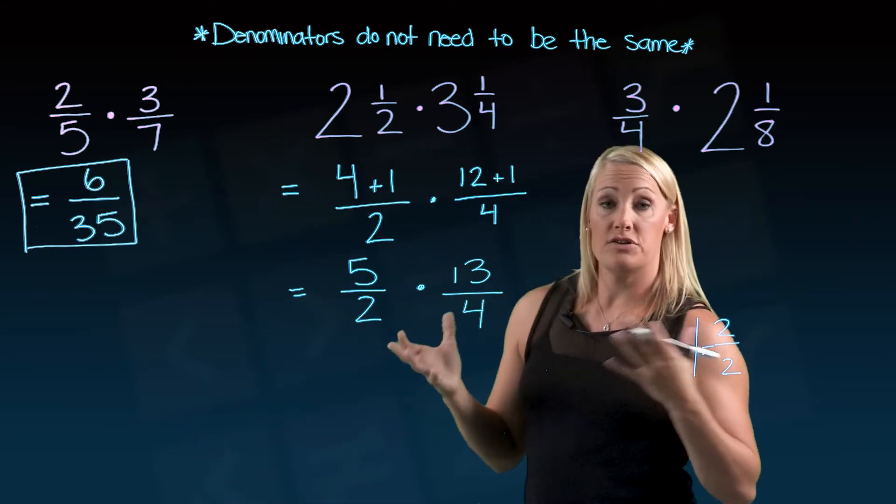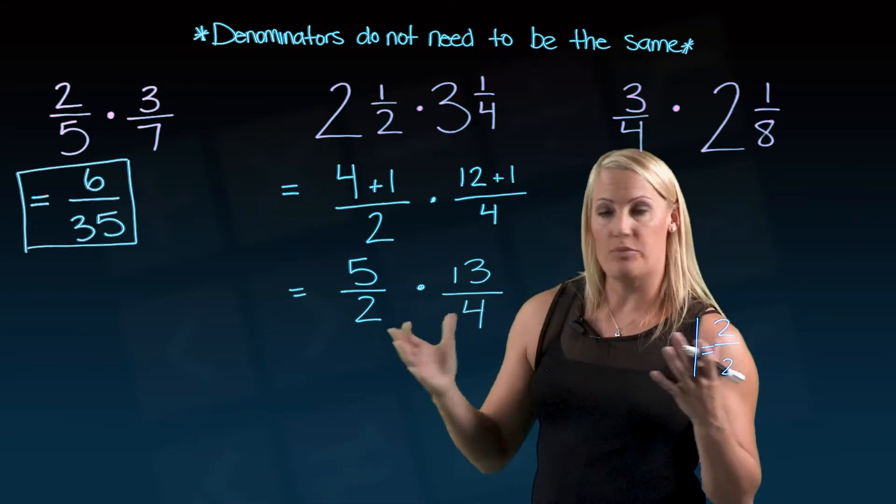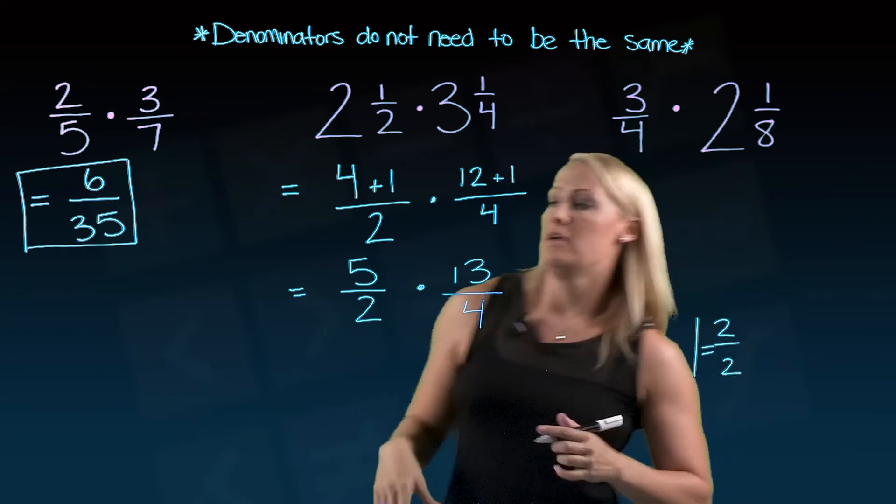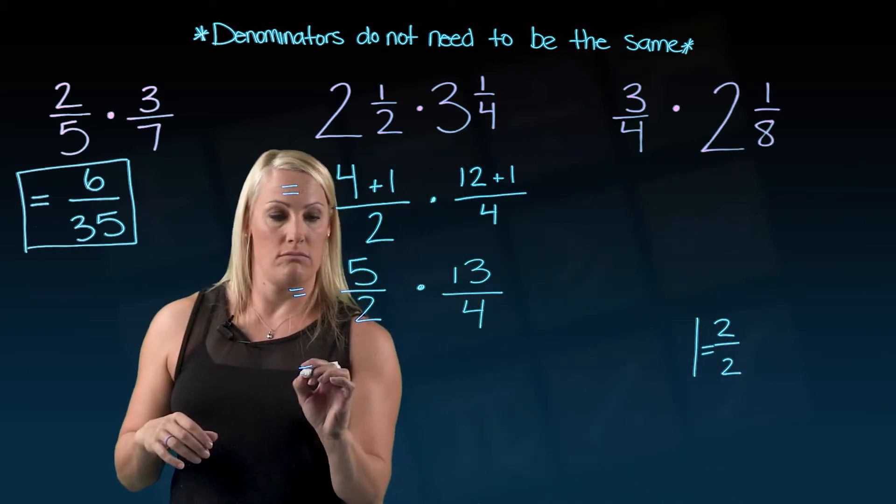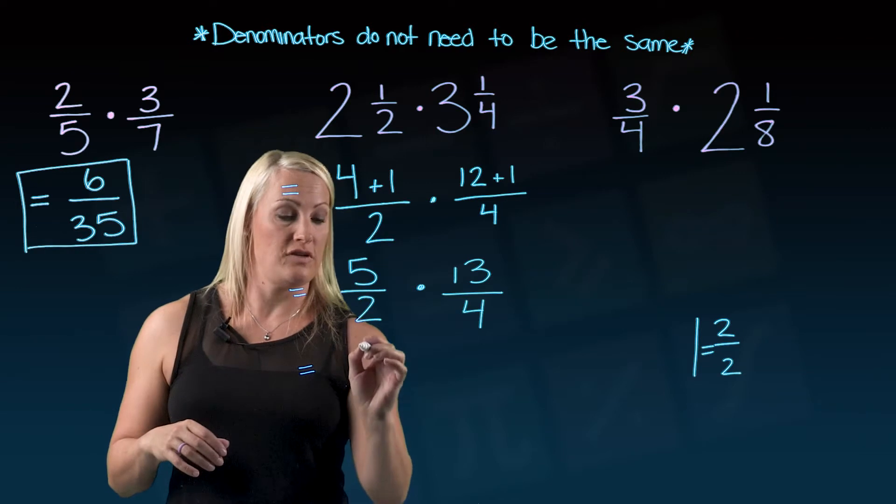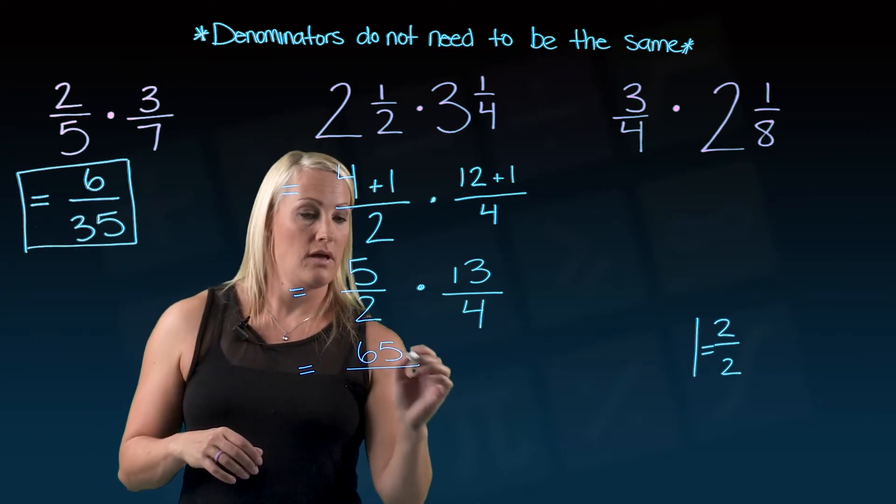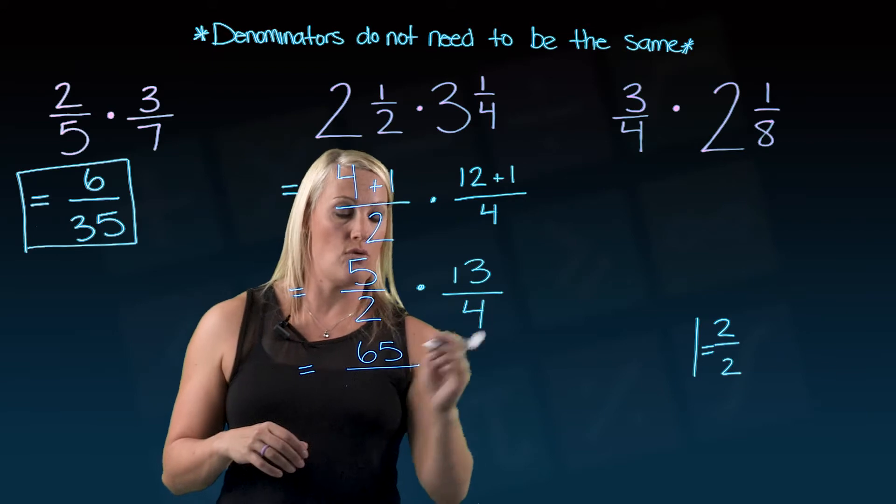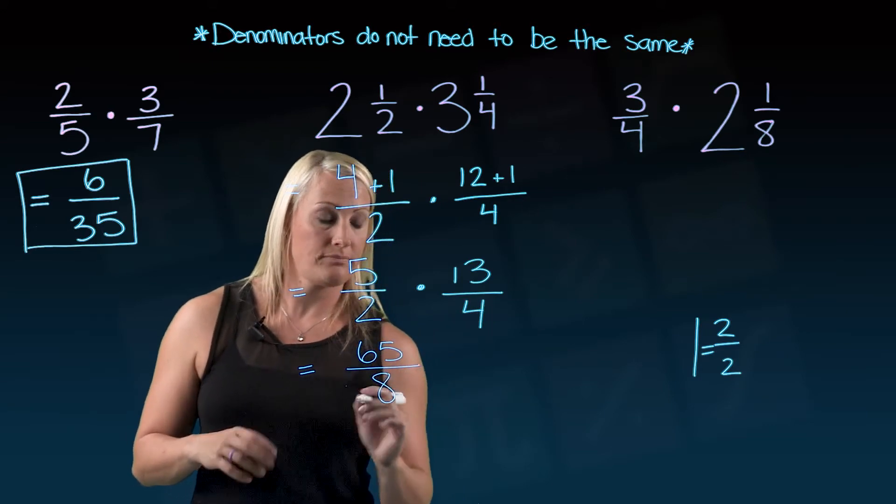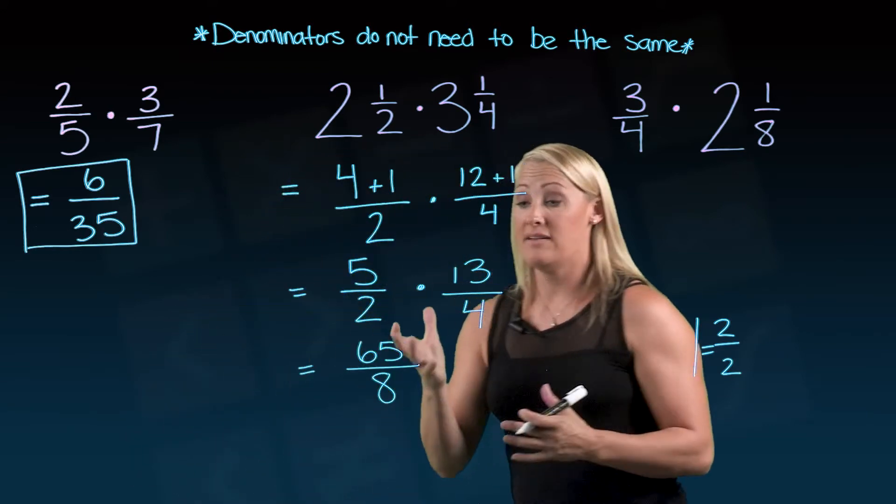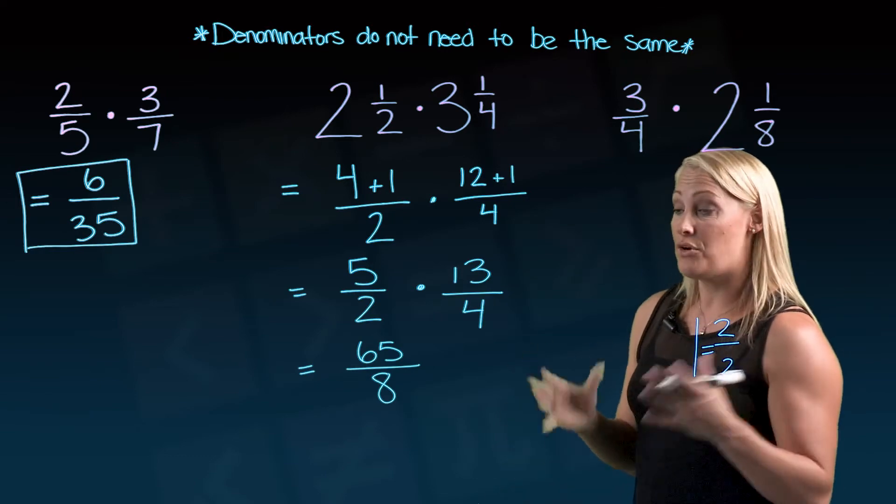So I've got 12 plus 1, which is 13. The 4 stays the same. And now I've got 2 improper fractions, but I can multiply these just straight across. So I am going to do that. So 5 times 13, which is 65. And then 2 times 4, which is 8. I've multiplied it, and 65 over 8 is the correct answer.